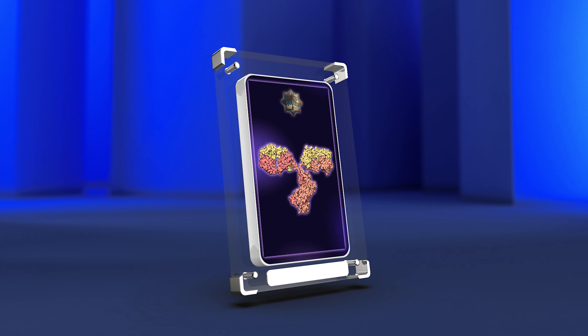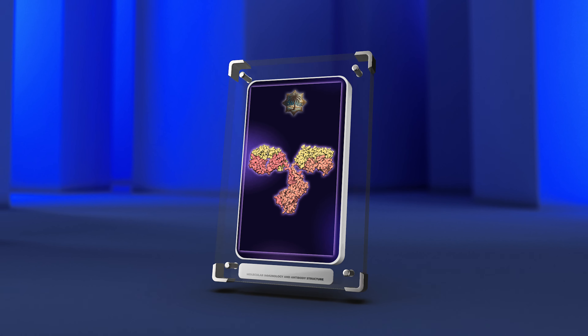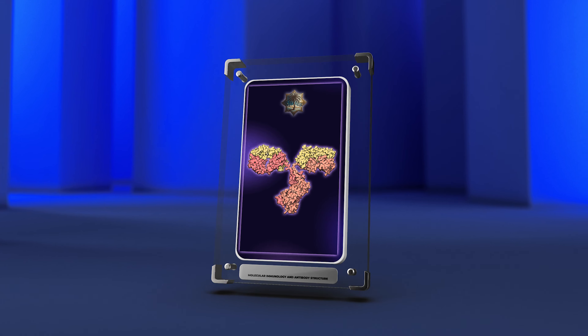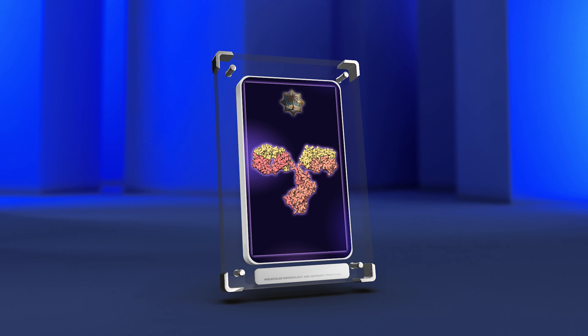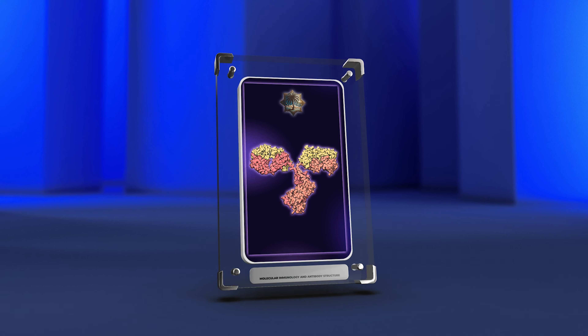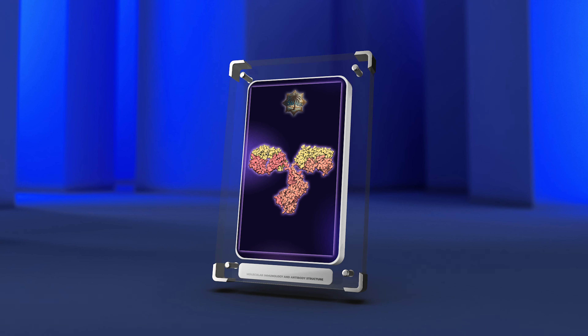This section concludes by emphasizing the intricate mechanisms that enable our immune system to combat pathogens. Key concepts include gene rearrangement, receptor signaling, and antibody interactions, which are crucial in advancing immunology and designing effective therapies.